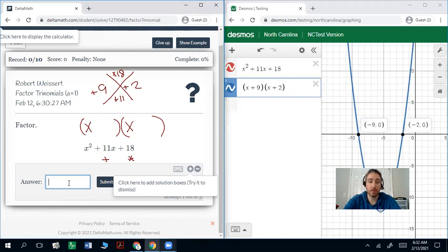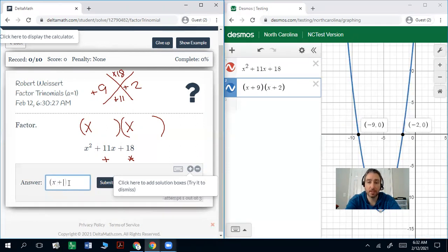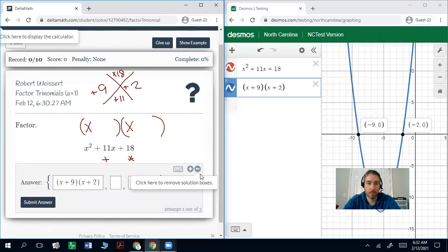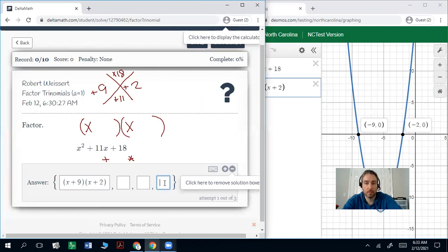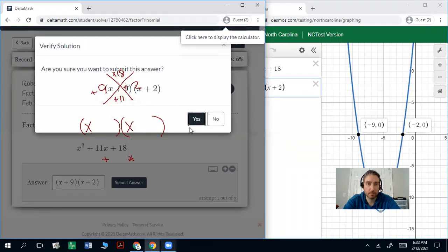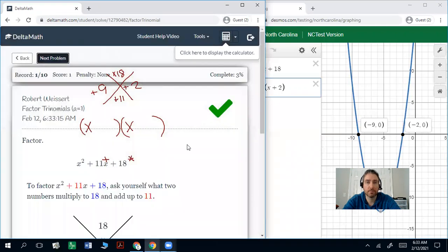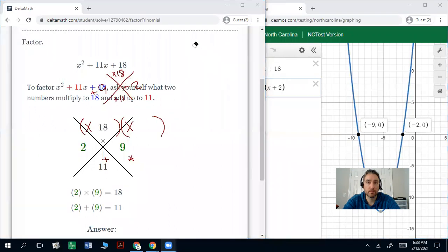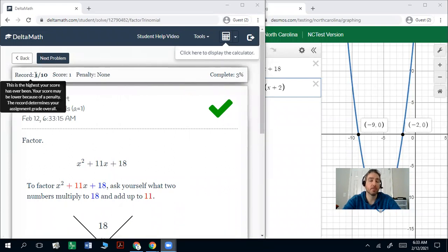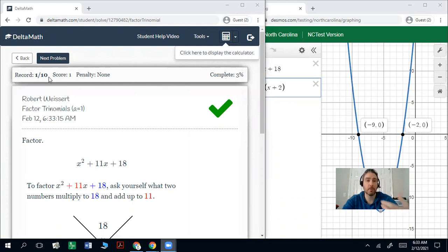So in your answer box, you'll want to do parentheses. It doesn't matter which one you do first, but you want to do x plus 9, close parentheses, and then do another open parentheses x plus 2. And go ahead and click submit answer. And there you go. It'll tell you what your percent completion is for the entire assignment. And then this here will tell you how many of the problems that you mastered before you should move on to the next skill.